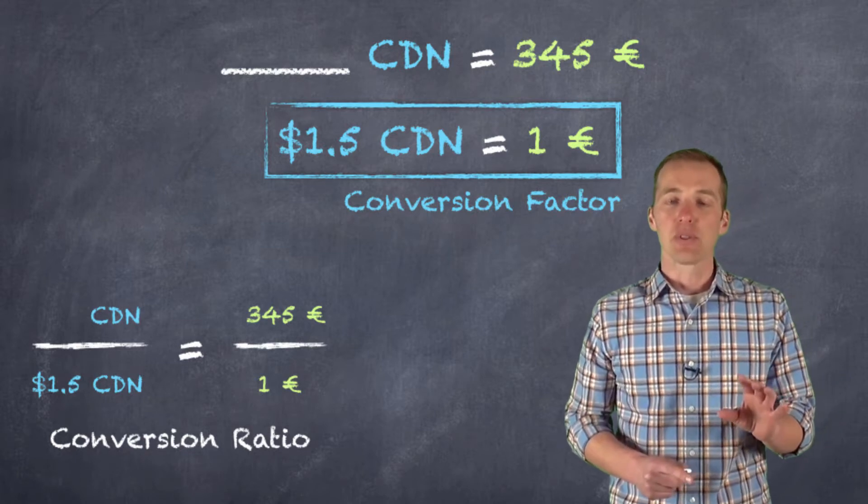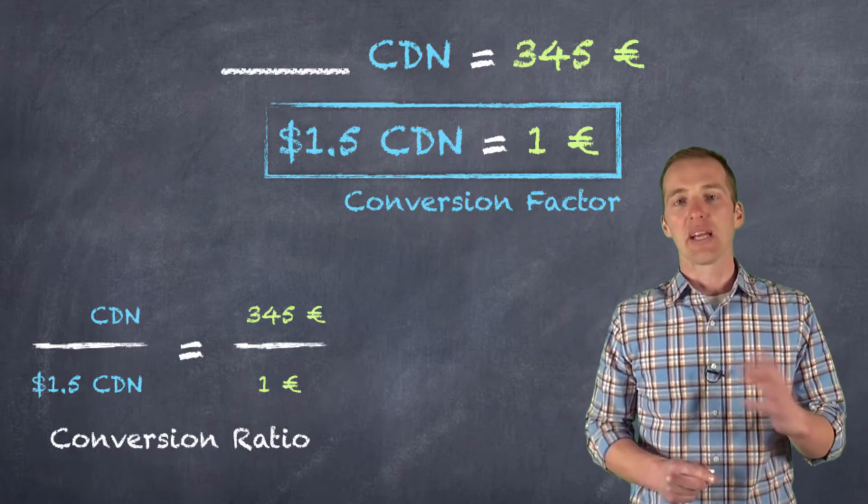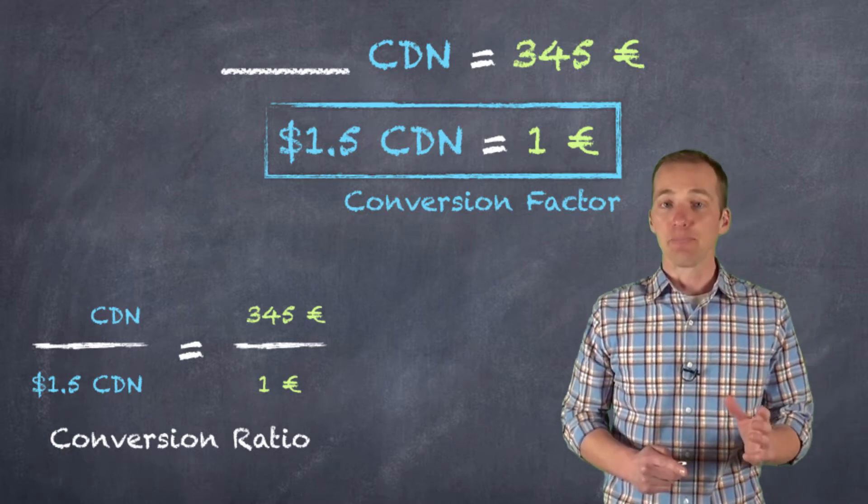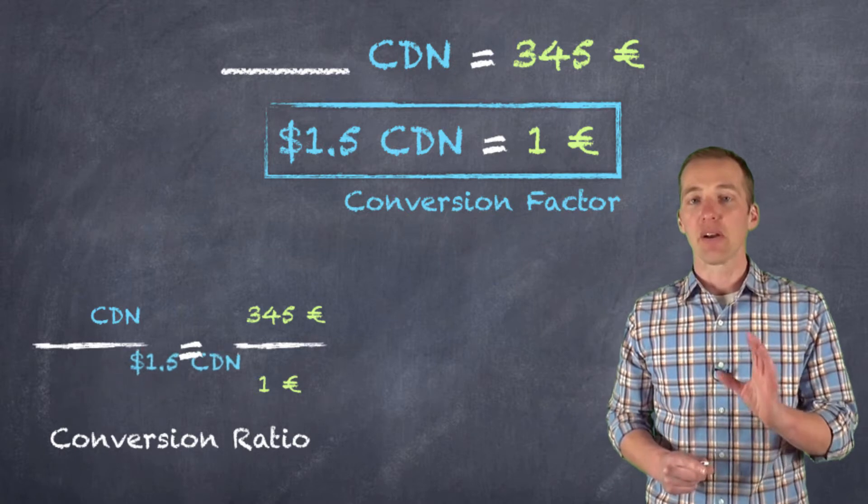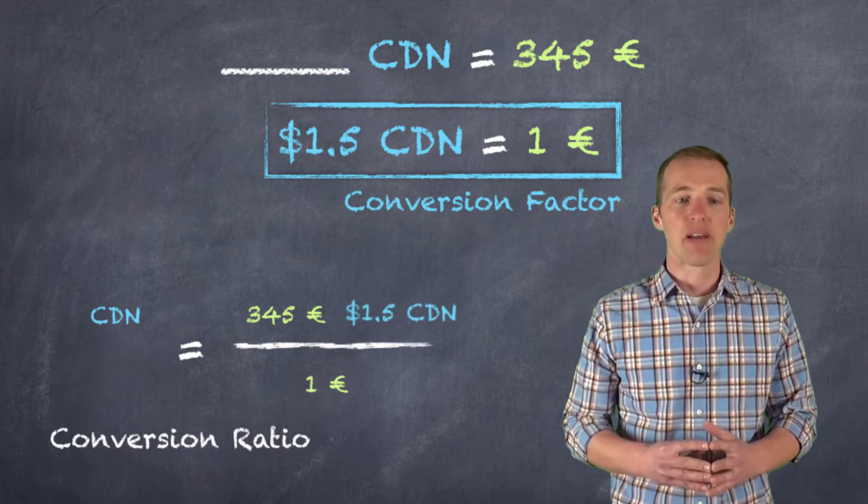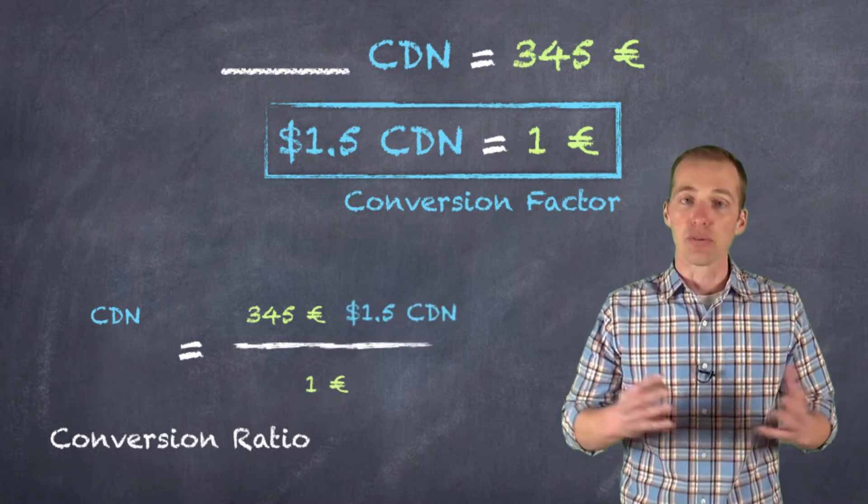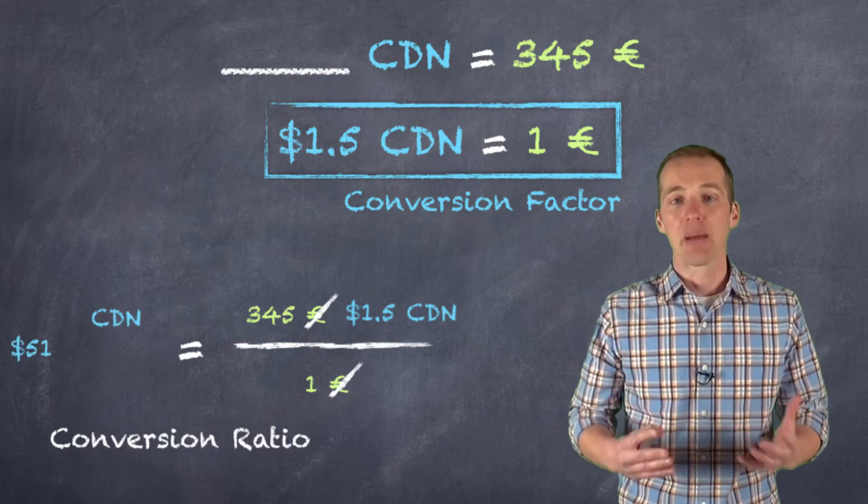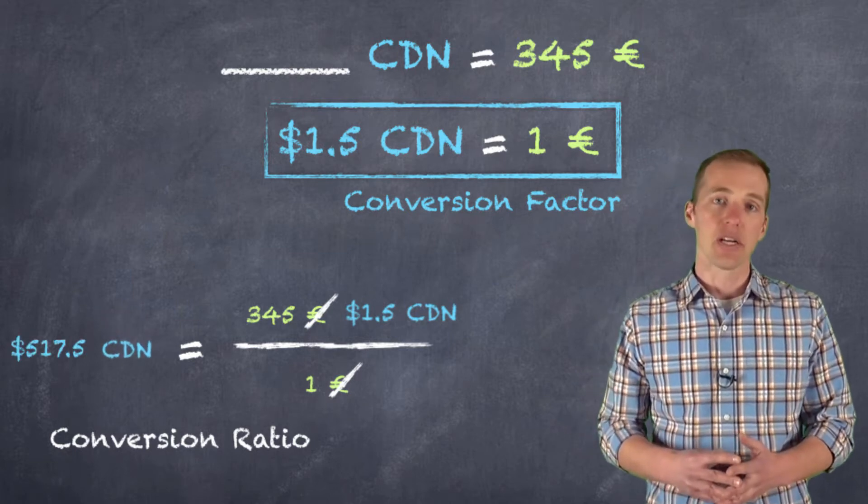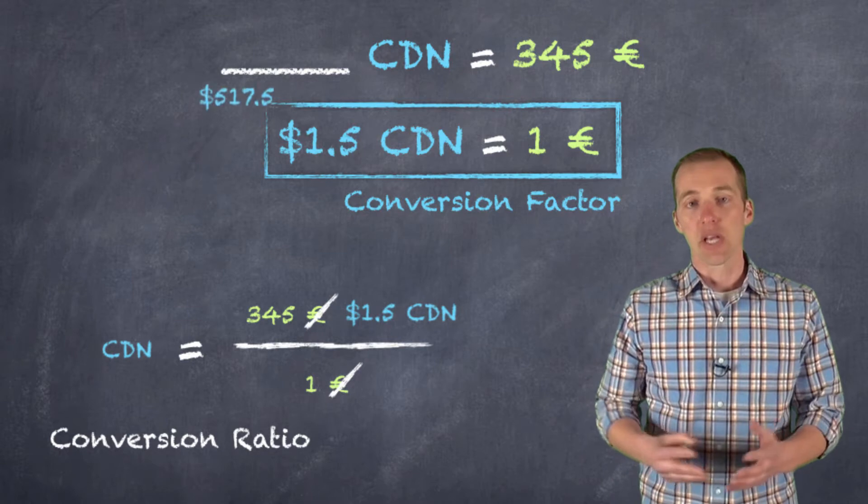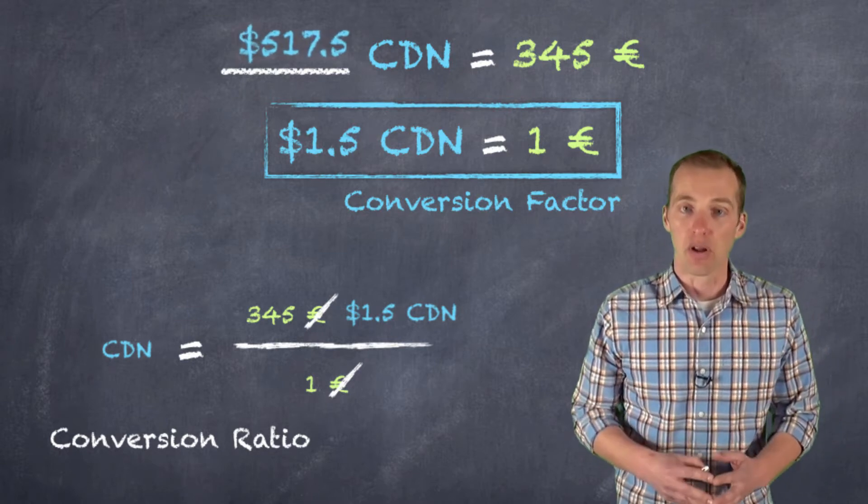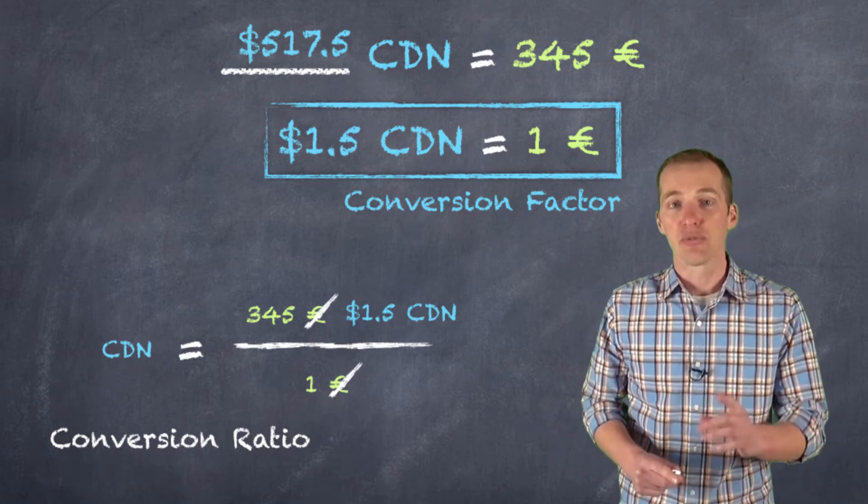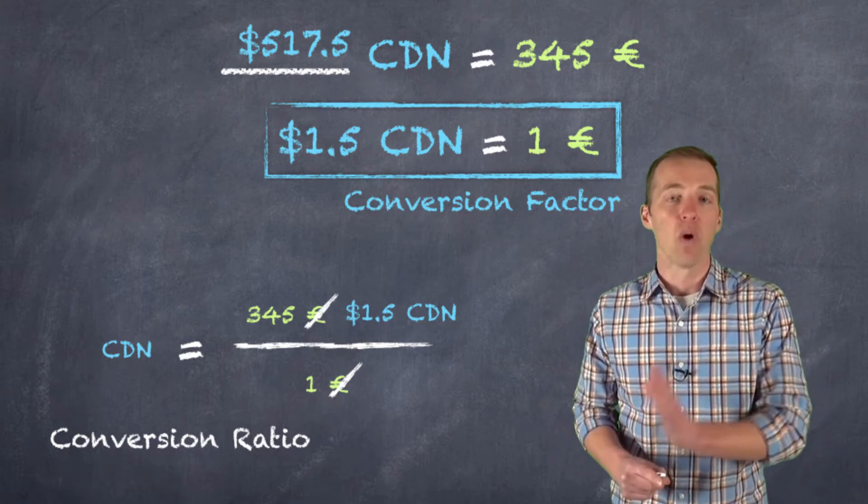So notice here that I have an equal sign. So anything that I do to one side, I have to do to the other. Or we can use the idea of cross-multiplying. Ultimately, what's going to happen is I'm going to have three hundred and forty-five euros multiplied by one point five Canadian divided by one euro. Notice what happens to my euros. They are both now, one in the numerator, one in the denominator, they divide out and I'm left with the number of Canadian dollars that I'm going to be able to receive upon my return. And it turns out I'm going to be able to get just over five hundred dollars Canadian because I understand the conversion factor and how to use it in a conversion ratio to figure out how I get from one unit to the other.